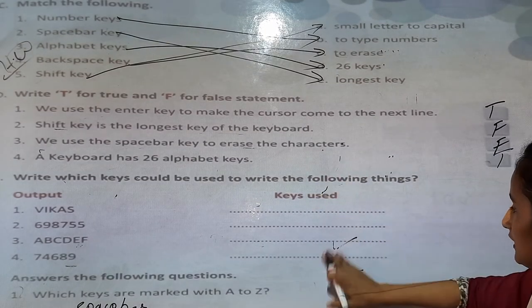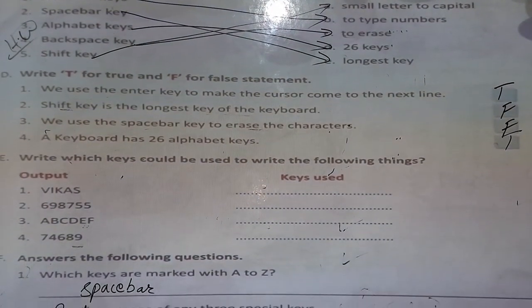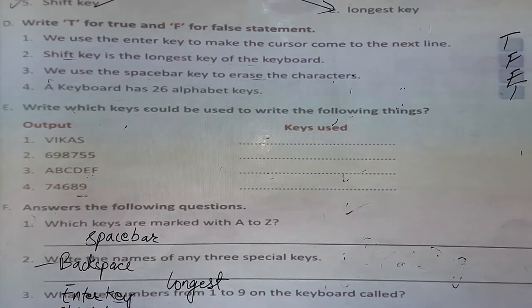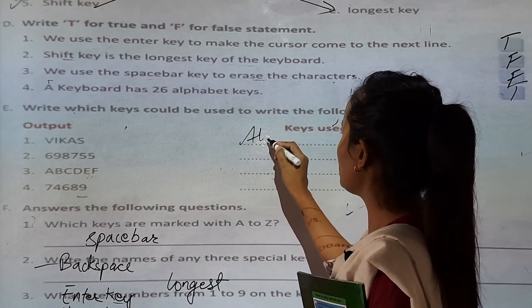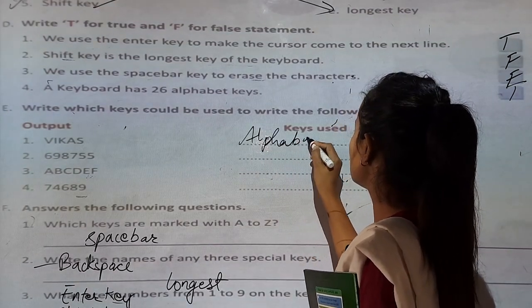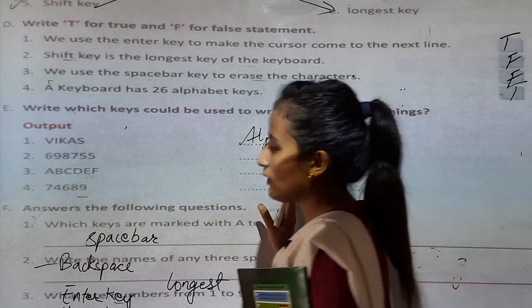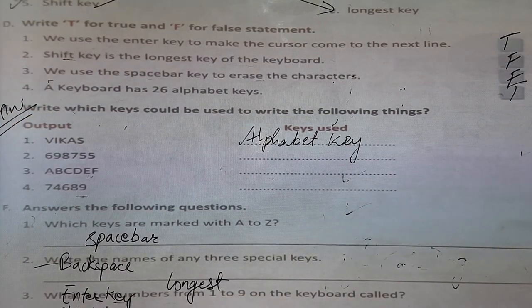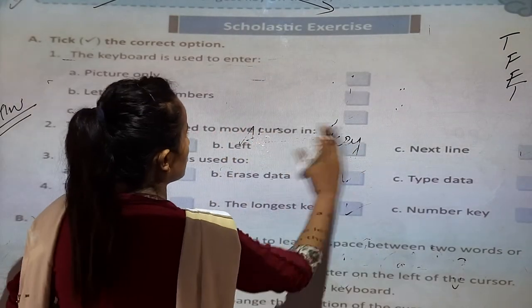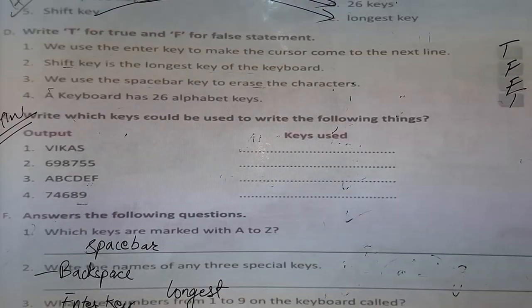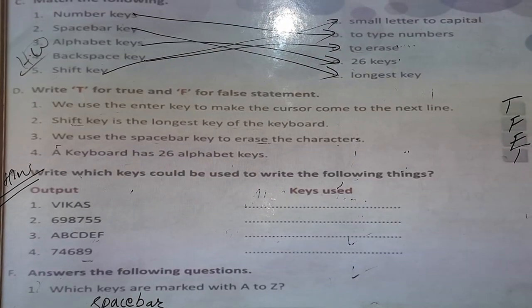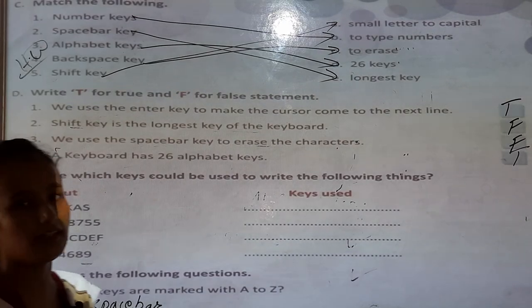You can see the next exercise E: write which keys could be used to write the following things. For example, V-I-K-A-S — with the help of the alphabet key we can write letters, so the answer is alphabet key. This is your homework — do exercises A, B, C, D, and E in your copy. We have finished the chapter. When school reopens, we will do the question and answer. Thank you, have a good day.